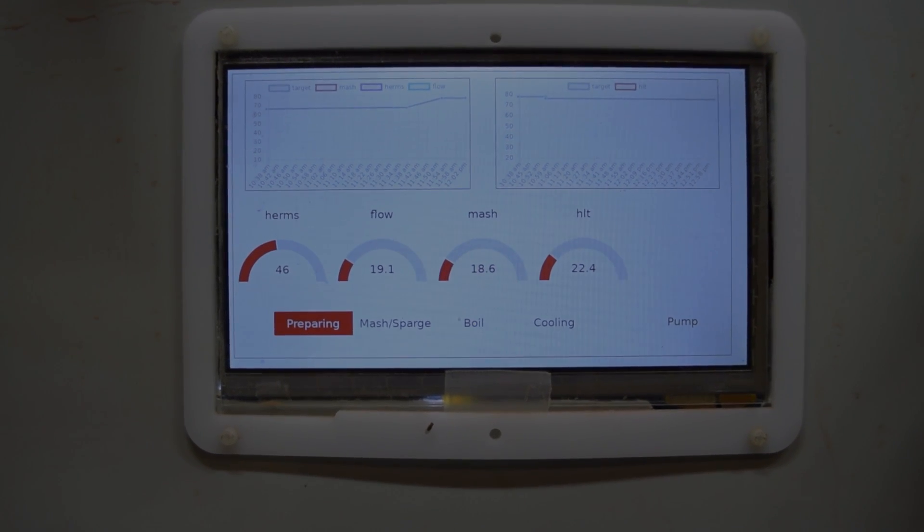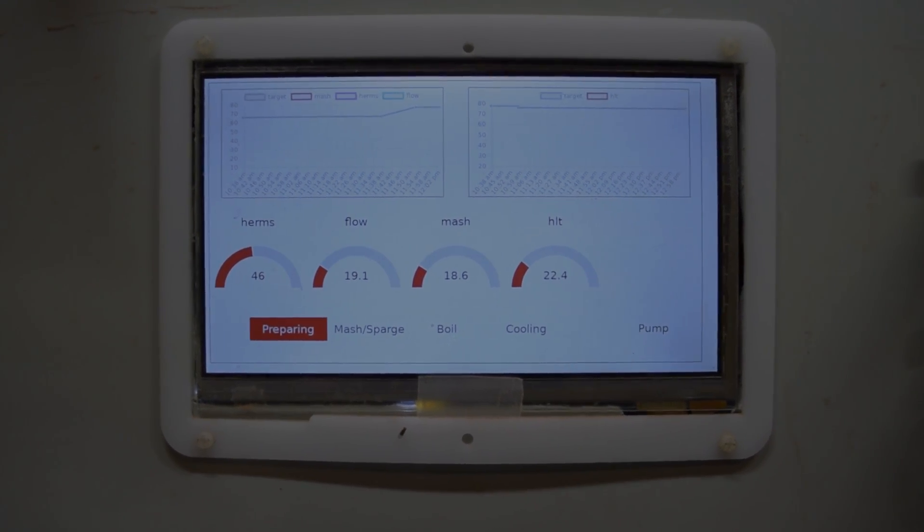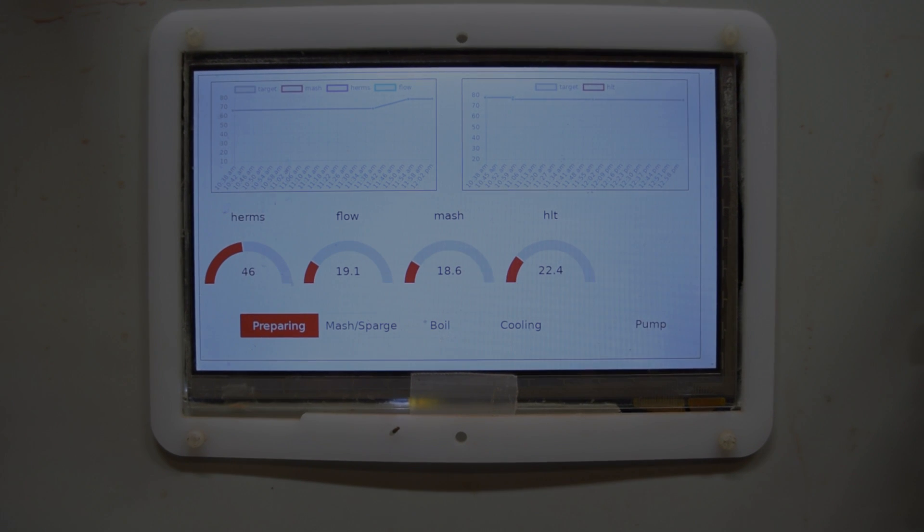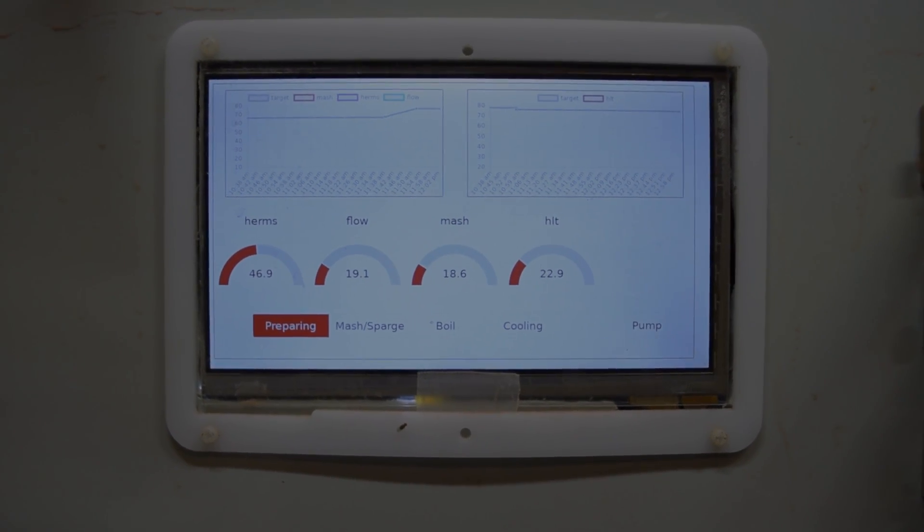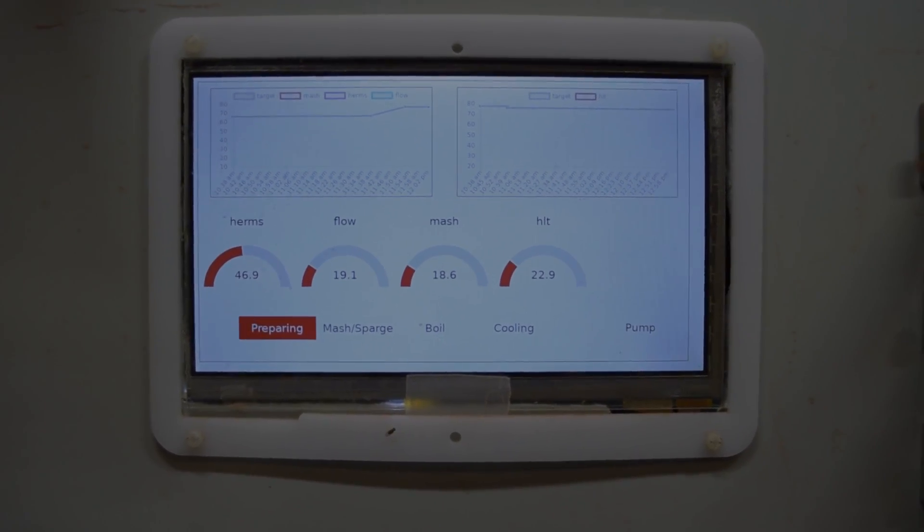So as the brewery gets ready, the computer controller is in its preparing mode. In this mode it's bringing the Hermes up to temperature, bringing the strike water up to temperature. Both of these temperatures have been pulled in from the beer XML data that I exported out of BeerSmith.